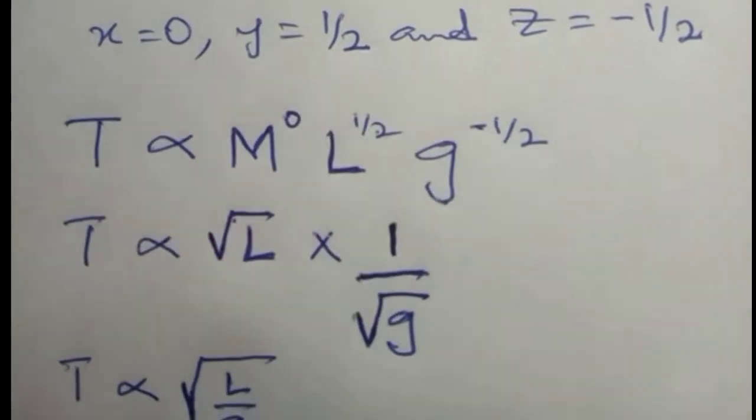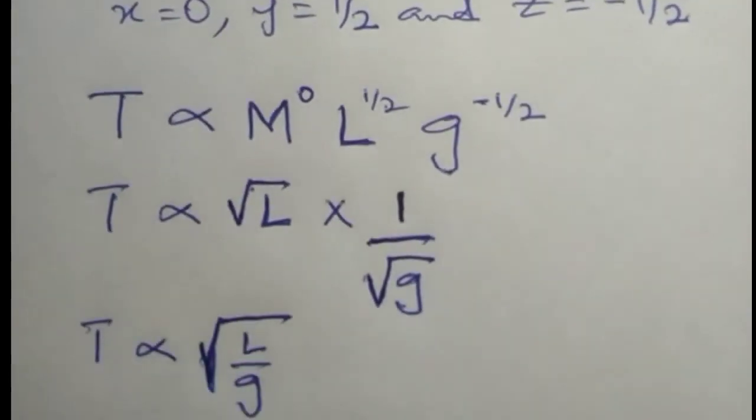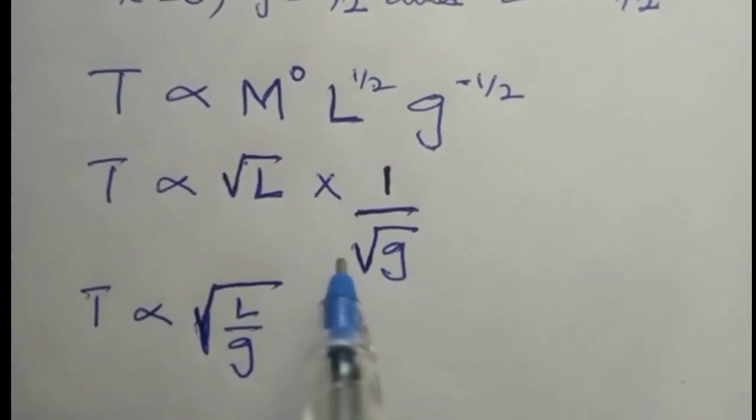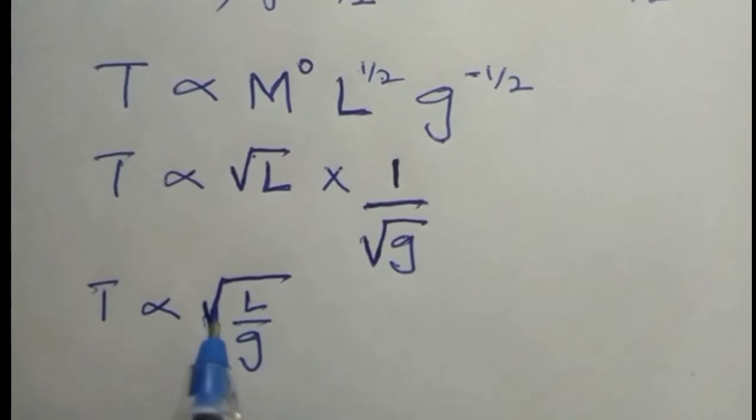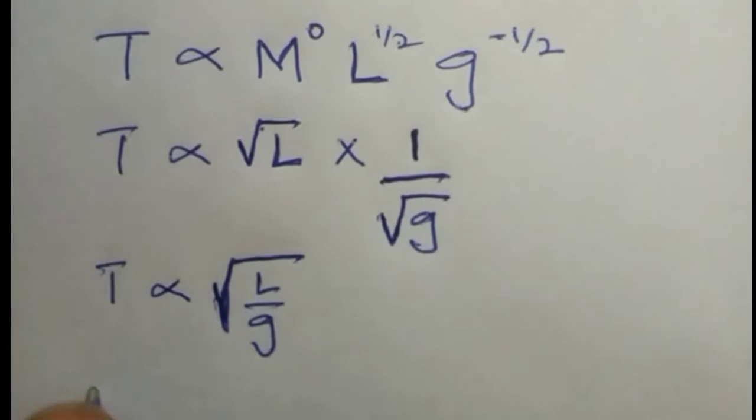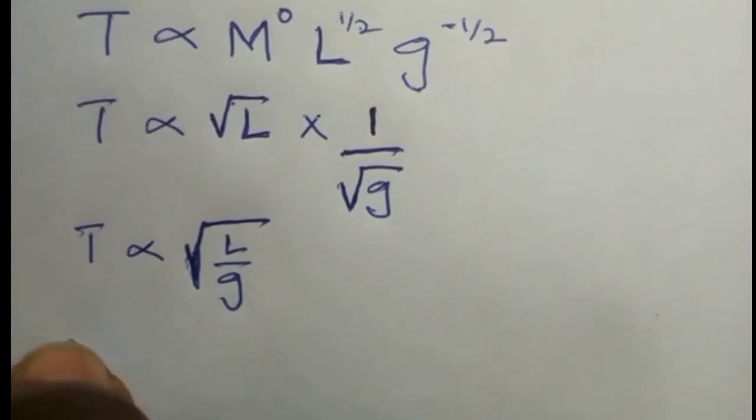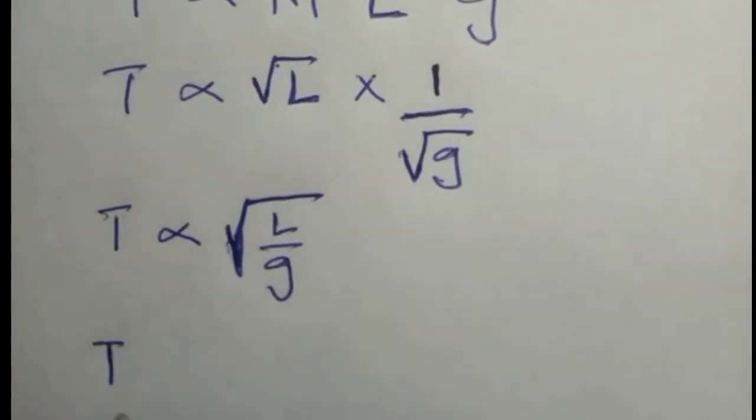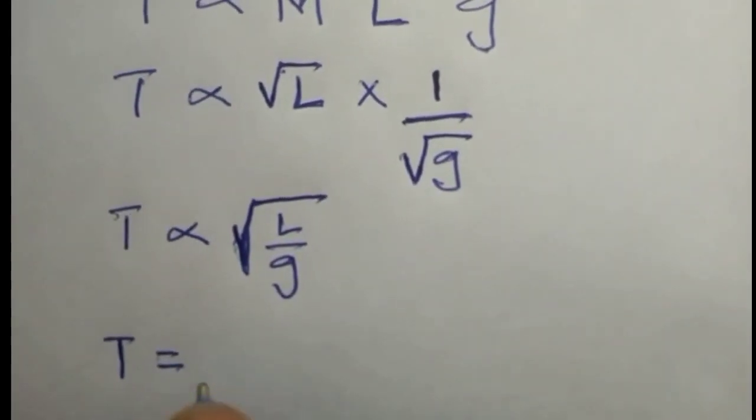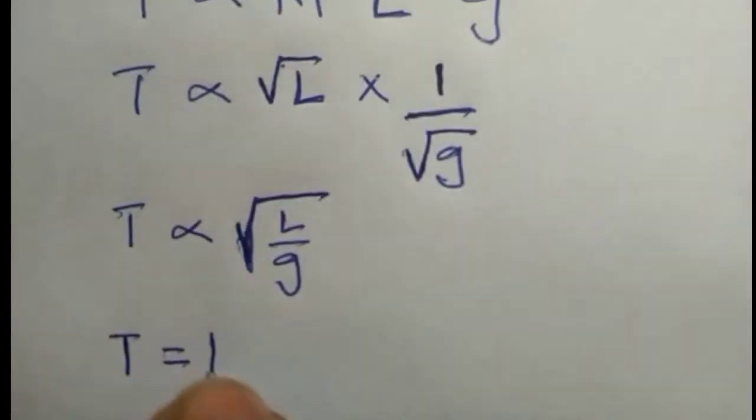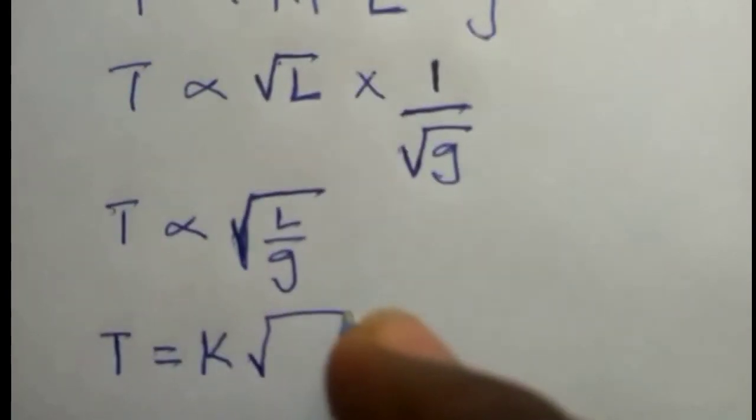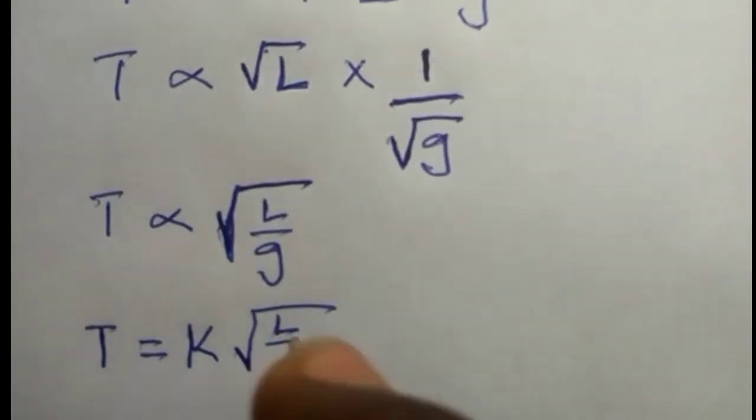Now we have gotten this, and our period T is proportional to square root of L over g. When we multiply both of these together, it gives us root L over g. Now don't forget, we're asked to find the direct relationship. So removing this proportionality sign, we put an equal sign. It means you have to introduce a constant k, so period equals constant k times root L over g.